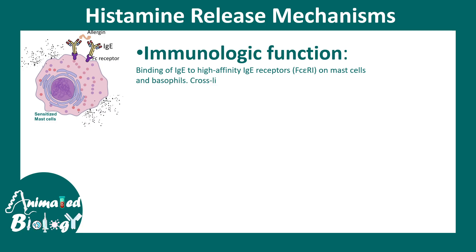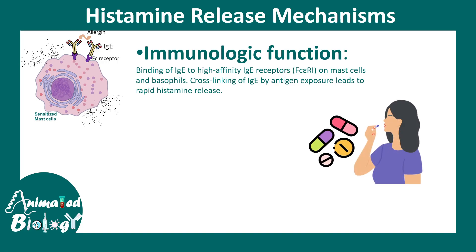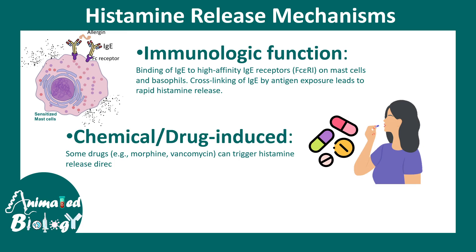Histamine can modulate immune function by modulating different aspects of inflammation. Mast cells have specific receptors known as FcεRI receptors, which bind to cross-linked IgE and antigen, causing the mast cell to degranulate. These granules contain histamine.